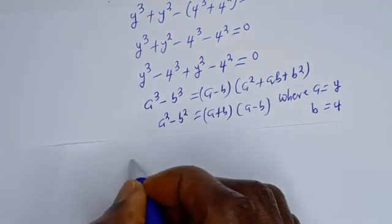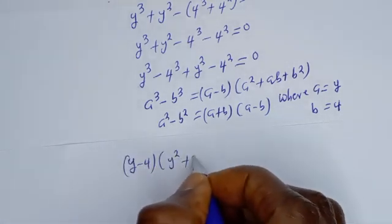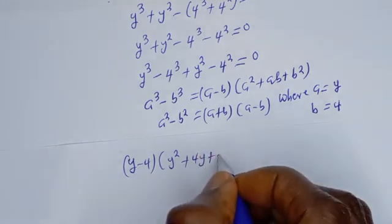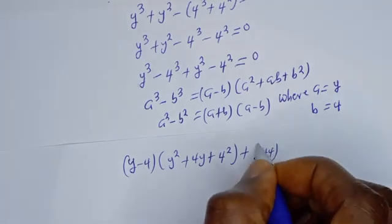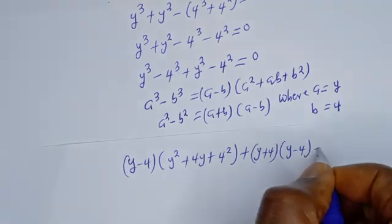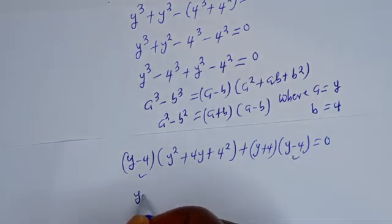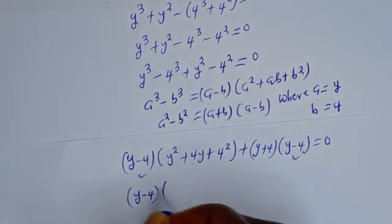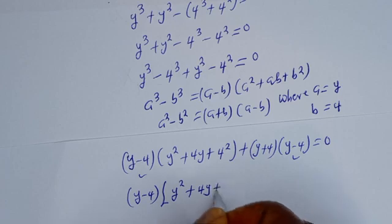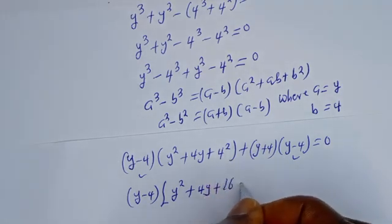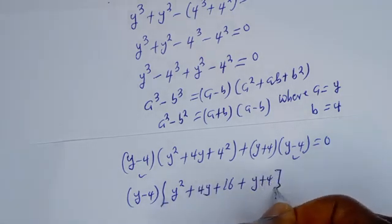Then here we have (Y − 4)(Y squared plus 4Y plus 16) plus (Y − 4)(Y + 4) is equal to 0. Then Y − 4 is common — let's bring it out. Y − 4 bracket: dividing gives Y squared plus 4Y plus 16, plus Y plus 4, equal to 0.